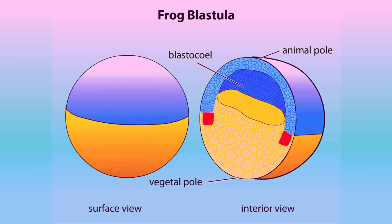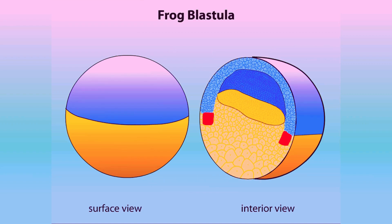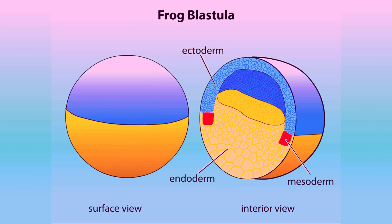A blastula contains large yolk-filled cells at the vegetal pole and smaller cells at the animal pole. The three colors represent the three tissue layers that become defined early in embryogenesis: yellow indicates endoderm, red indicates mesoderm, and blue indicates ectoderm.